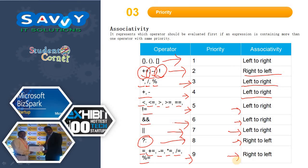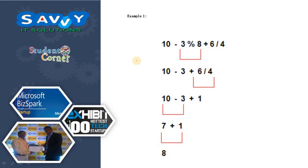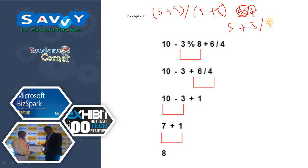Whenever an expression comes, we need to evaluate it based on this priority. That is the fundamental rule we must know. If you don't know the priority it is difficult to evaluate the expression. For example, consider 5 + 5/5 + 5 without brackets versus (5 + 5)/(5 + 5) with brackets. Both results are not the same — one gives 11, the other gives 1 — because it follows the BODMAS rule.